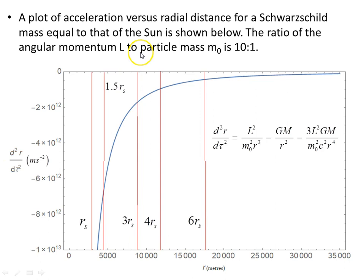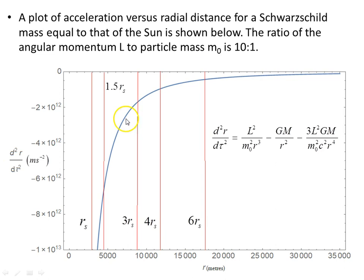The ratio of angular momentum L to particle mass m₀ is 10 to 1 — 10 units of angular momentum per unit of mass. A plot of acceleration versus radial distance shows that starting out at 35,000 meters (35 km), the acceleration very quickly takes off, with reference lines at 1 Schwarzschild radius, 1.5 Schwarzschild radii (= 3GM/c²), 3, 4, and 6 Schwarzschild radii. All values are negative — all towards the mass. This shows the curvature surrounding the Schwarzschild mass, and you can imagine how much larger this would be for a mass much bigger than the sun.